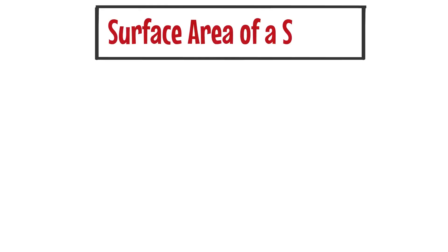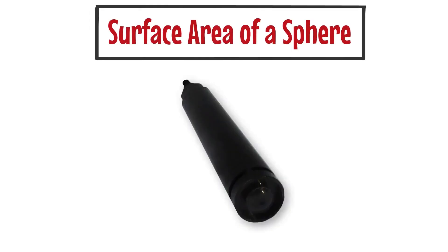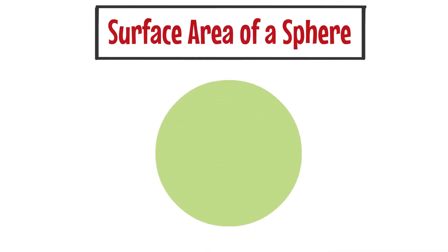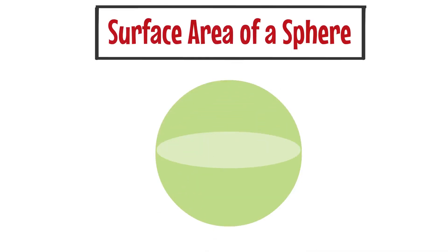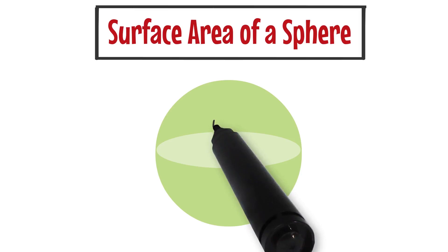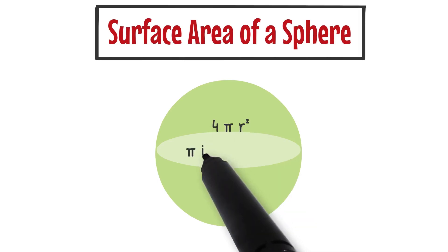Surface area of a sphere. The surface area of a sphere is the number of square units that will exactly cover the entire surface of that sphere. The formula used to calculate the surface area of a sphere is 4 pi r squared.